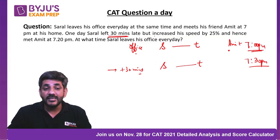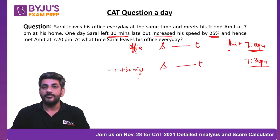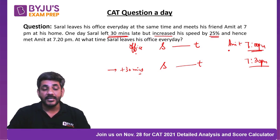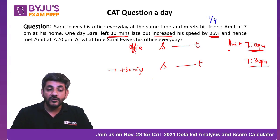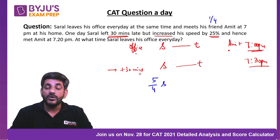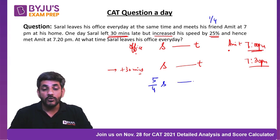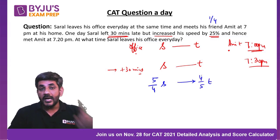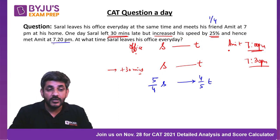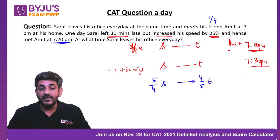He increased his speed by 25%, which equals 1/4. So his speed becomes 5/4 S. When speed becomes 5/4 times, the time becomes 4/5 times — there is a reduction in time.